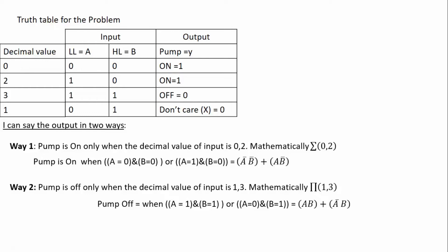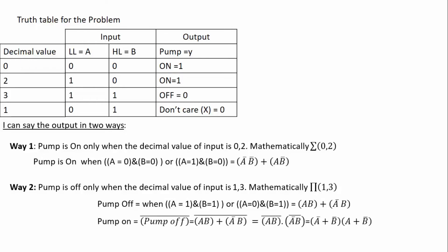But I need the expression for pump on. So I am taking the complement of the pump-off expression. Taking the complement means the opposite — so I can get the pump-on expression. Based on De Morgan's law: (x + y)' = x'·y', and (x·y)' = x' + y'. Applying this: complementing A·B + A-bar·B gives (A·B)'·(A-bar·B)' = (A-bar + B-bar)·(A + B-bar). This is the product of sums expression for pump on.